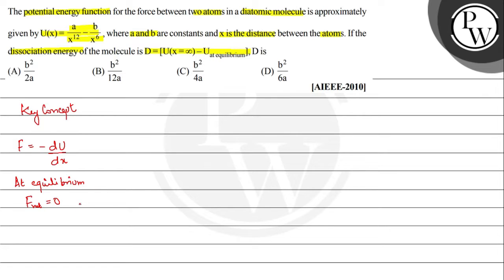In the question, the potential energy function given is U(x) = a/x¹² minus b/x⁶. When x tends to infinity, the potential energy function reduces to zero.